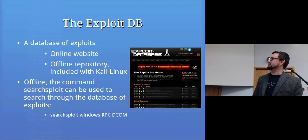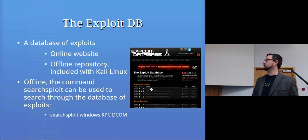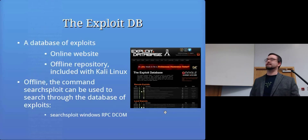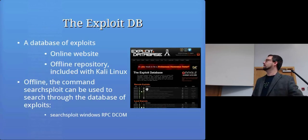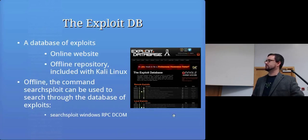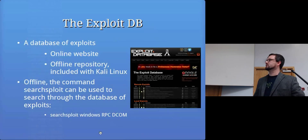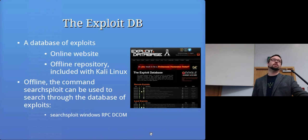If you look on the Exploit DB, the website shows a whole list of exploits. For your report you might be interested in a remote exploit — an exploit that goes over the network to attack another computer — as opposed to a local exploit where you need to have some access to the computer already. There's an icon you can click to download the vulnerable software, and other links to get to the actual exploit itself. There's also an offline version on Kali Linux where from the command prompt you can search through this database rather than using the website.